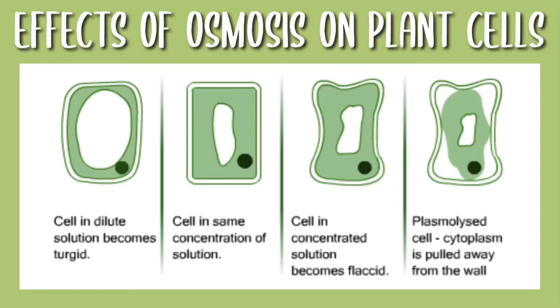After that we have a plasmolyzed cell and this happens when the plant cells lose way too much water and so the cell body or the cytoplasm is pulled away from the cell wall.